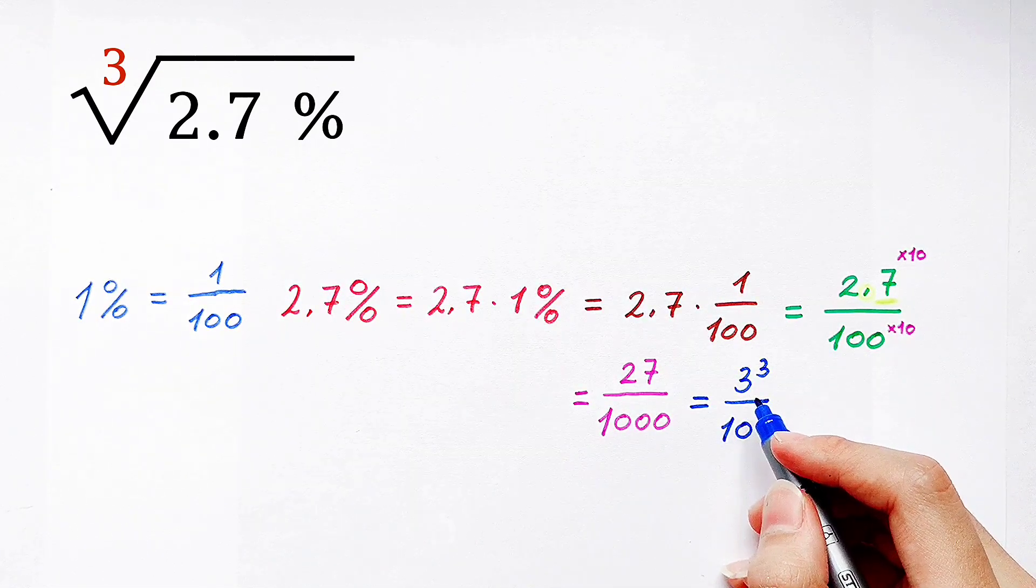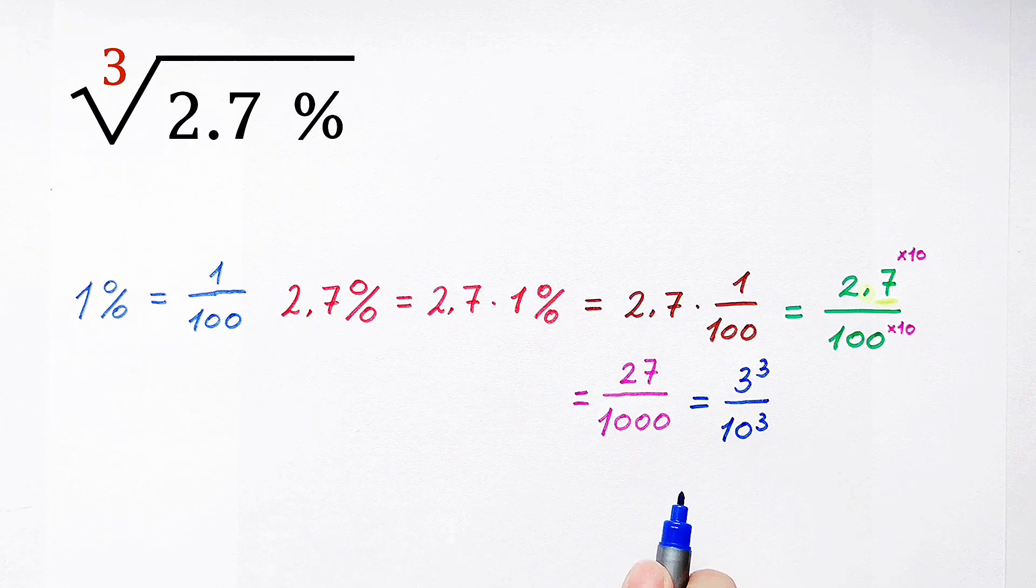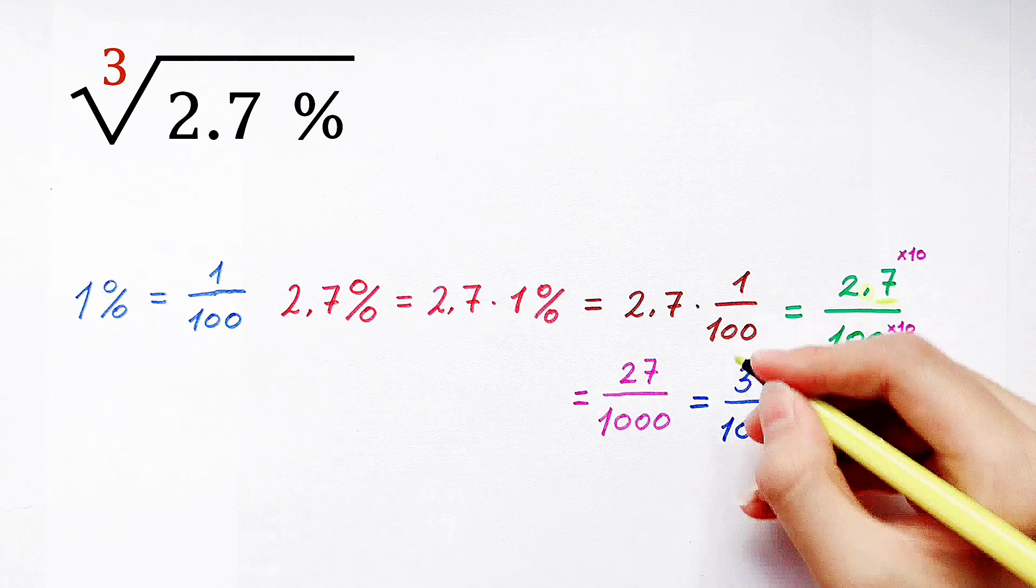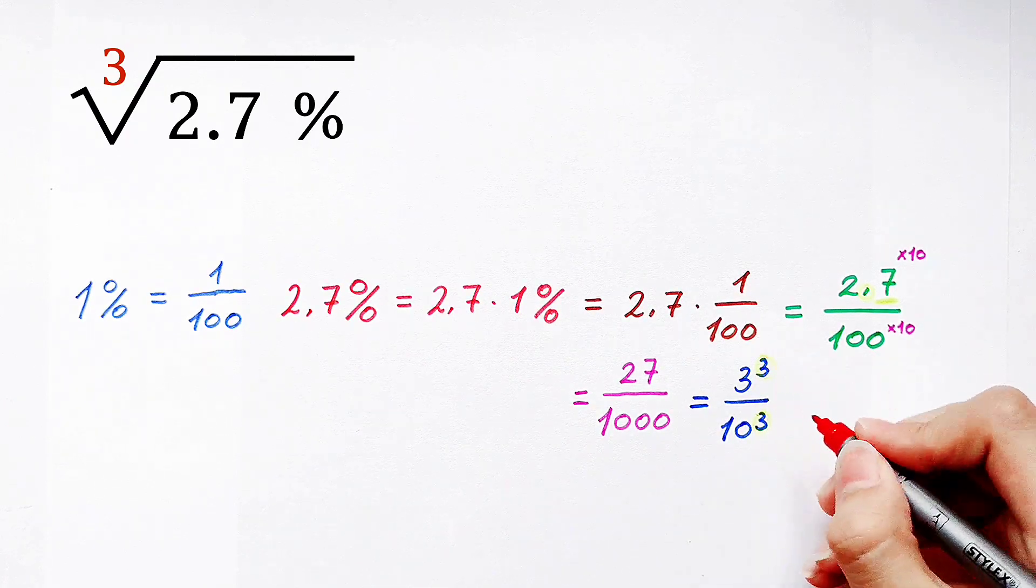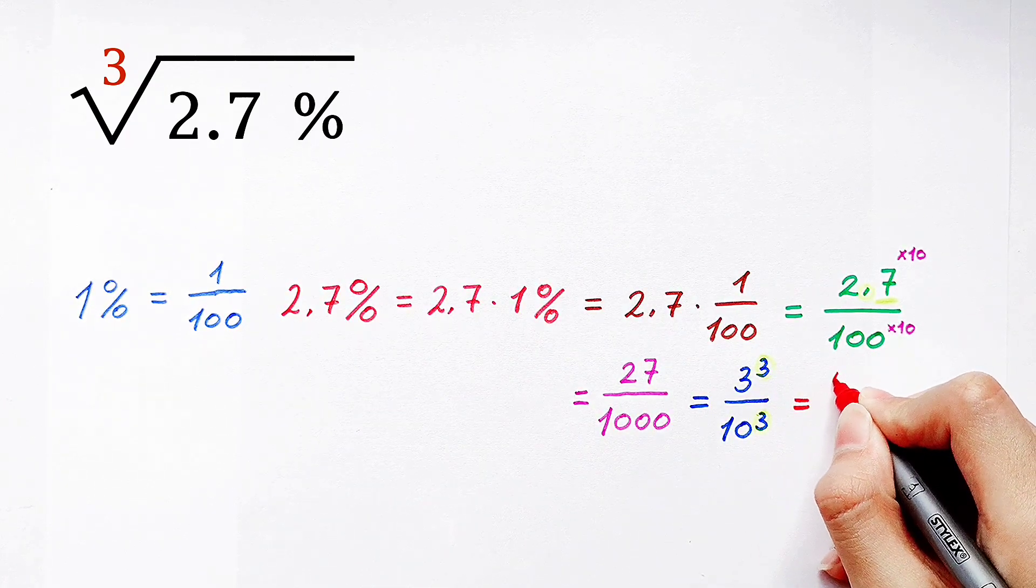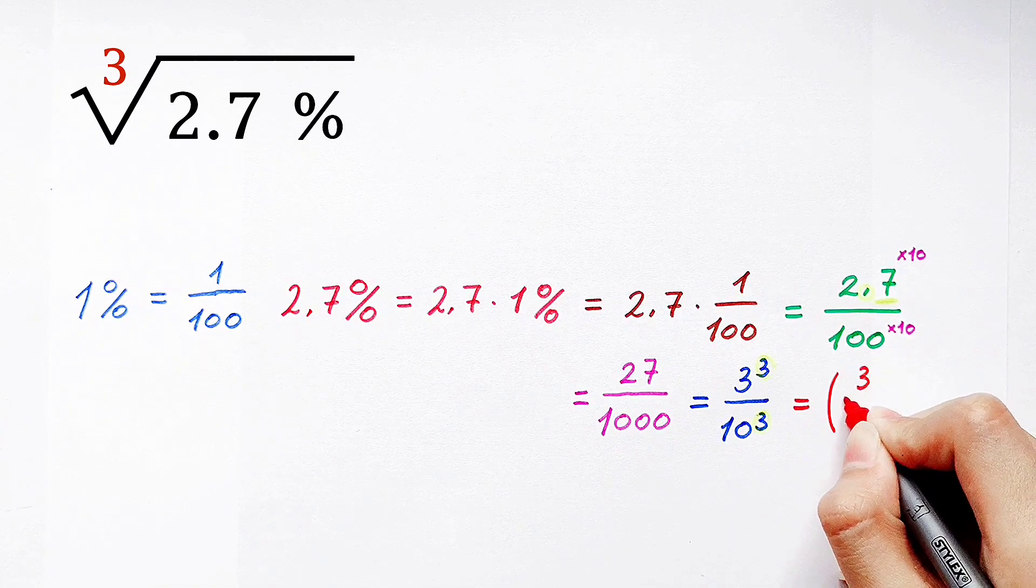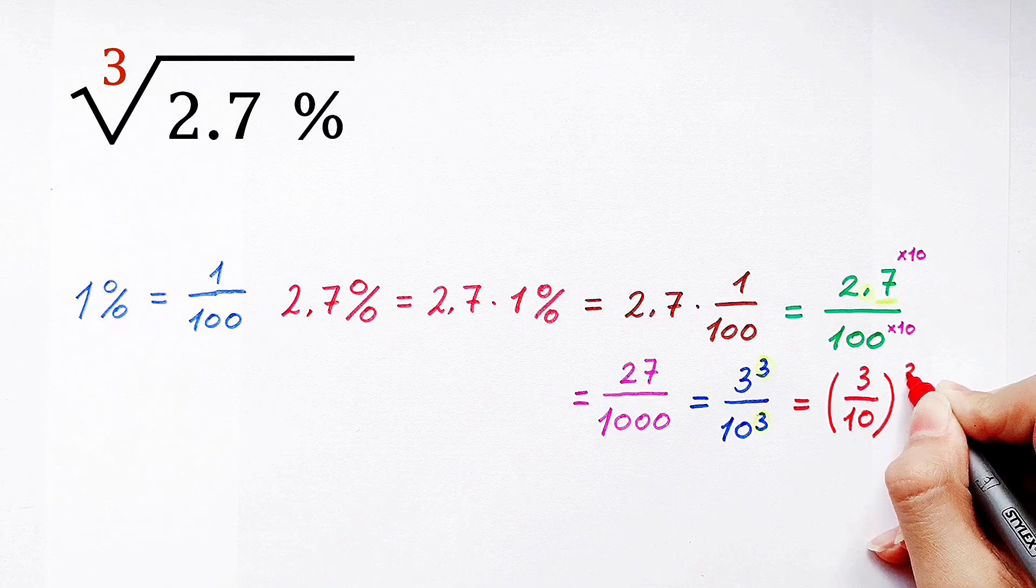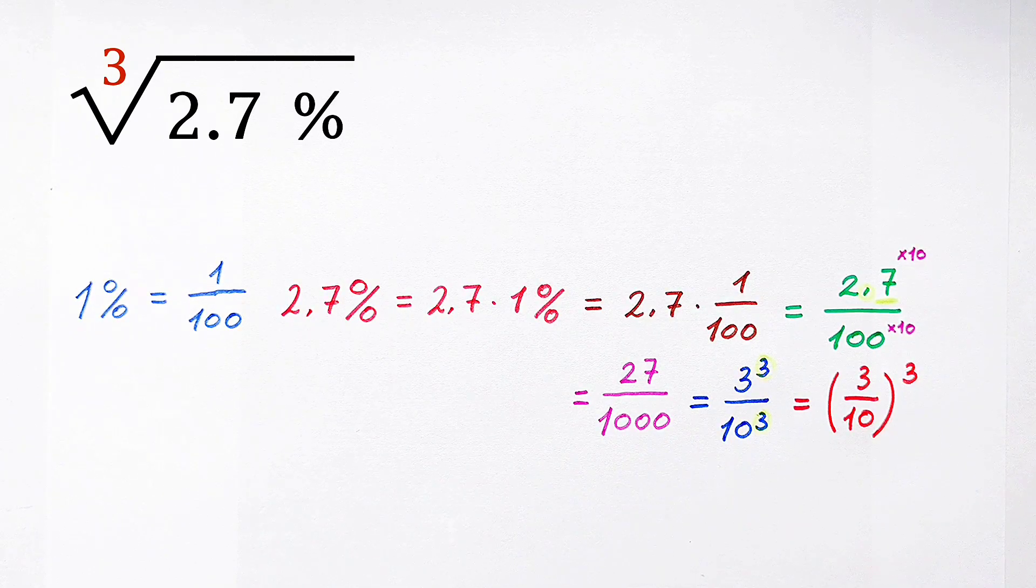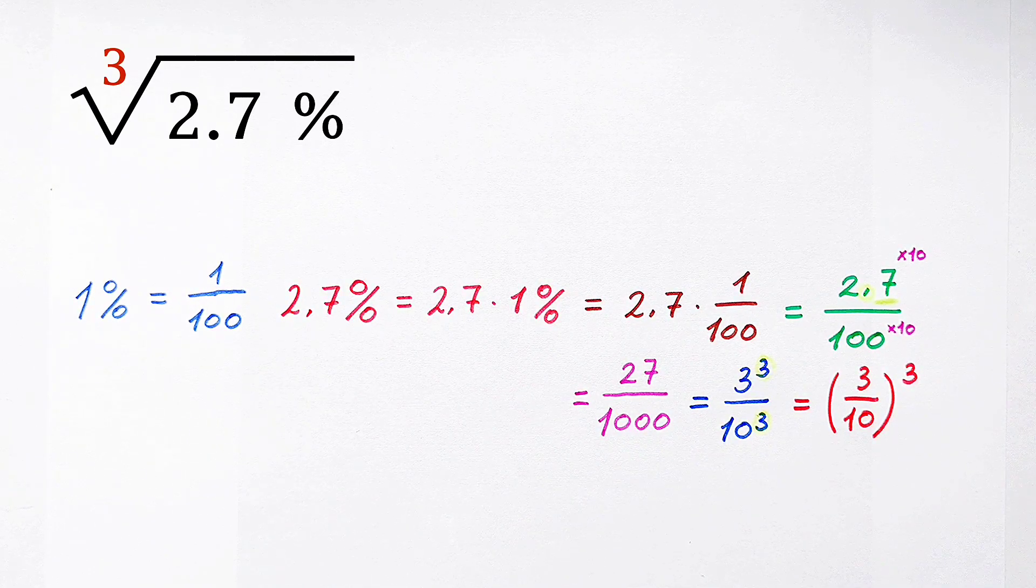The numerator is 3 to the power 3 and the denominator is 10 to the power 3. They have the same exponents.